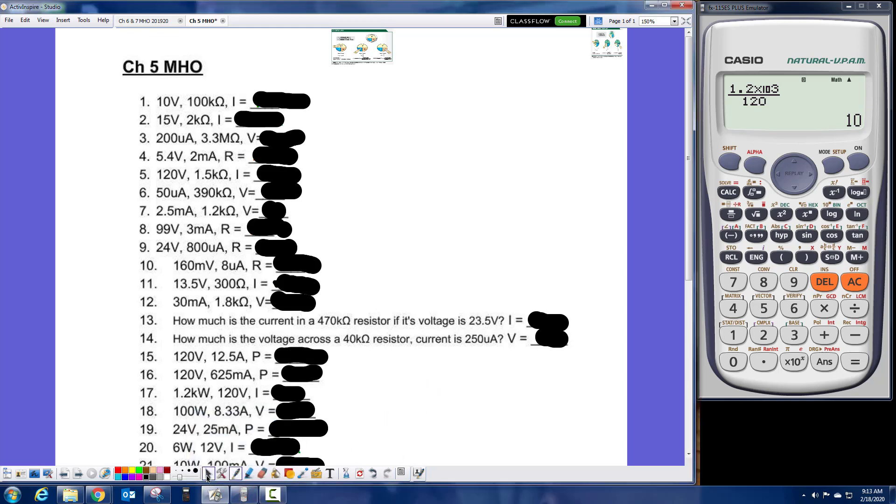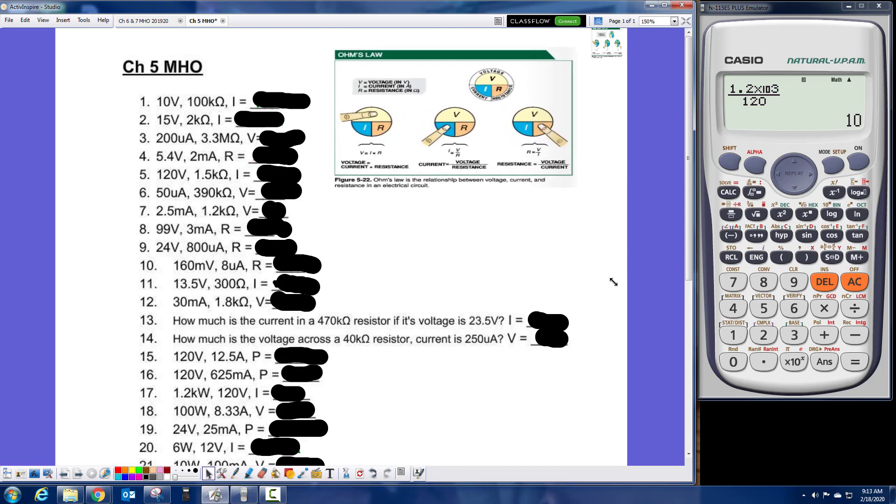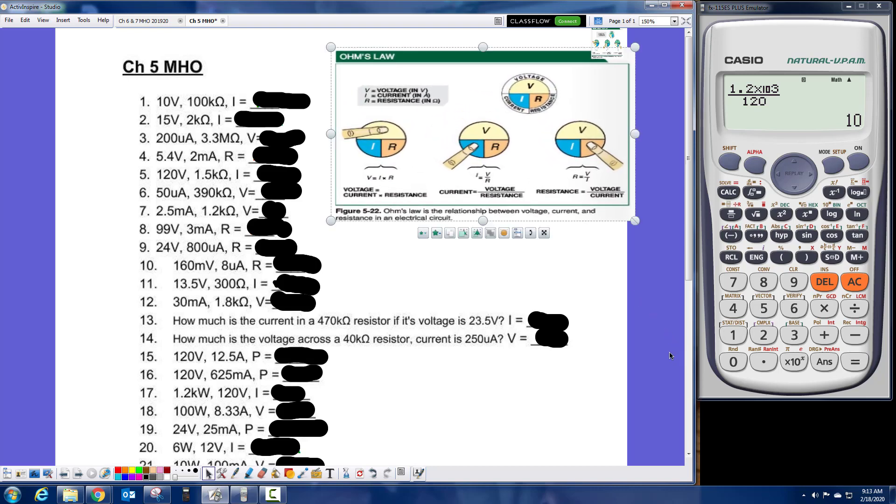So the first formula we're going to be using is Ohm's Law, which is found, this figure here is found in Chapter 5 of your textbook, which shows you how to use the Ohm's Law formula. And basically what they're showing us in Figure 22 is if you take the three letters of Ohm's Law, and this will work for any three letter algebraic equation, you put them in a circle. As long as you have two out of the three, you can find the third.